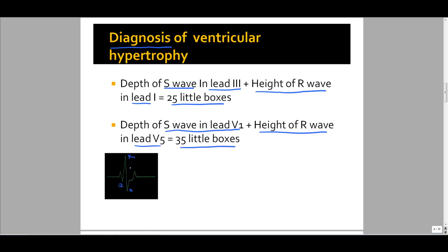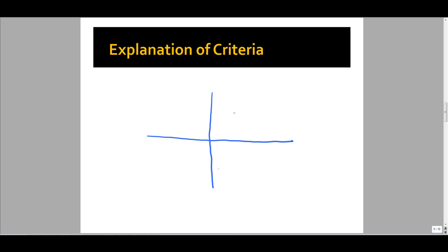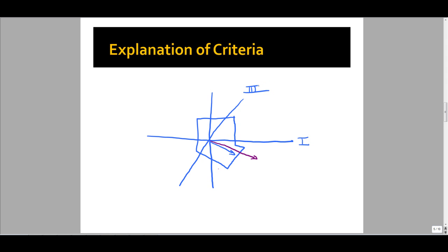Let's look at the reasoning behind the criteria for ventricular hypertrophy. I'm going to draw a few axes here — the lead 1 axis as the horizontal axis and the lead 3 axis coming diagonally. In left ventricular hypertrophy, it is the left ventricle that becomes larger due to some secondary process. The normal axis is shown in blue. As the left ventricle becomes larger, the magnitude of depolarization increases, demonstrated by the purple vector, and keeps increasing, demonstrated by the red vector. These increases in magnitude are recorded by the electrodes we use to obtain our EKG.